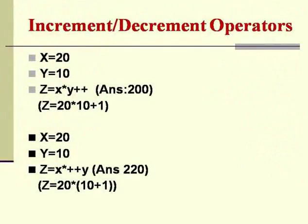Because the increment operator comes after the variable y, it is called a post-increment operator. The actual value of this entire operation will be only 20 * 10, because that +1 is applicable only after the multiplication operation is performed — it is not taken into account during multiplication. That is why the answer remains at 200.